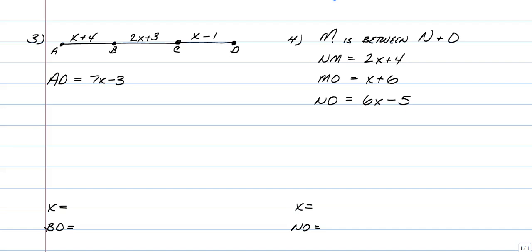So the first one would be this example here. Notice we have three segments, AB, BC, and CD all together. And what we are going to do is figure out what X is and the length of BD, but we're given that AD is 7X minus 3. So to do that,